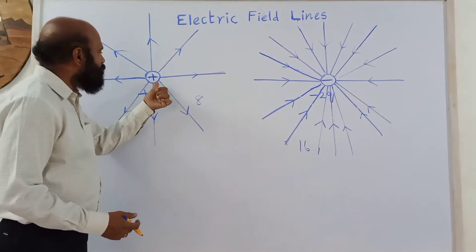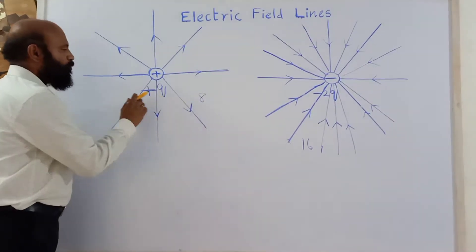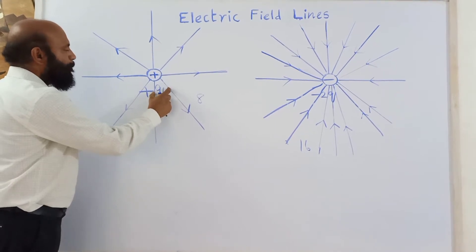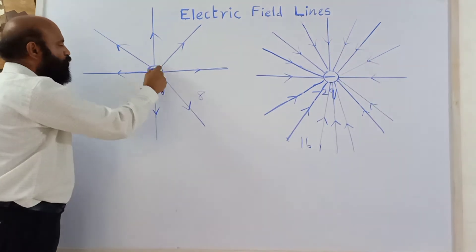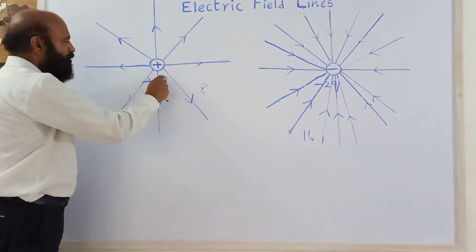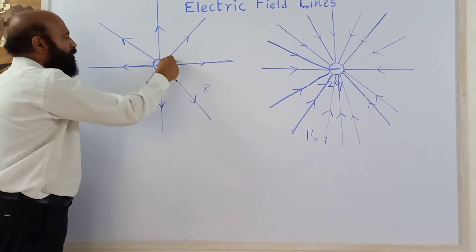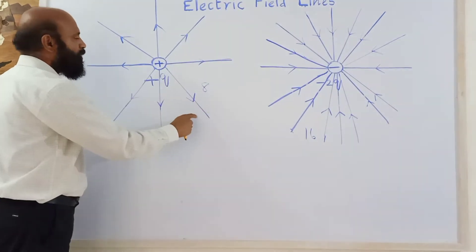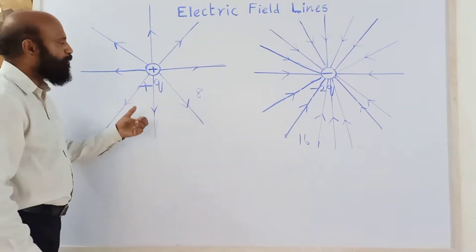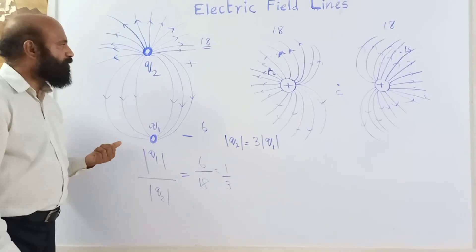We can make a comparison between near the charge and away from the charge. Near the charge, the gap between lines is less — lines are crowded, so field is more. When we go away, the gap is more, so field is less. The same eight lines pass through a smaller area near the charge, so field is strong there, but through a larger area farther away, so field is less. Electric field depends on both the magnitude of the charge and the distance.